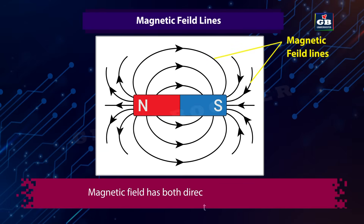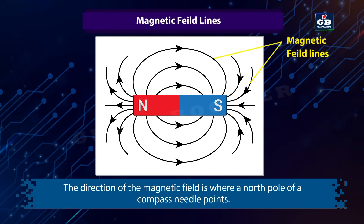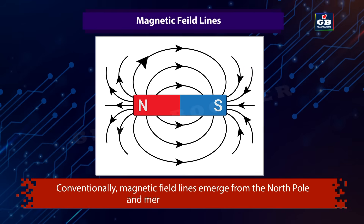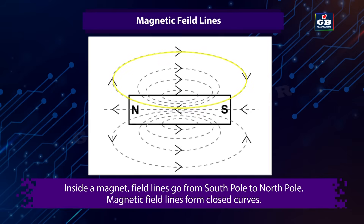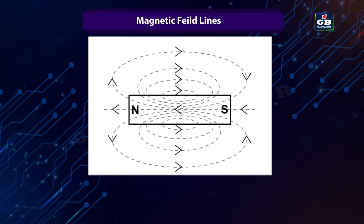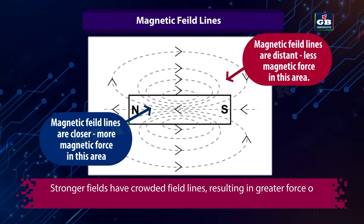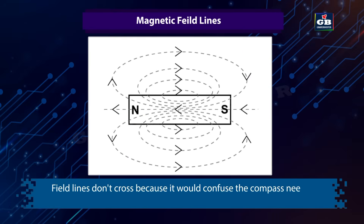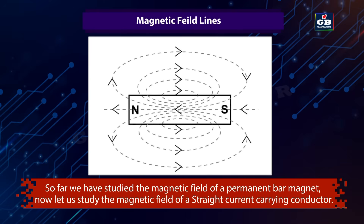Magnetic field lines. Magnetic field has both direction and magnitude. The direction of the magnetic field is where a north pole of a compass needle points. Conventionally, magnetic field lines emerge from the north pole and merge at the south pole. Inside a magnet, field lines go from south pole to north pole. Magnetic field lines form closed curves. The closeness of field lines indicates the strength of the magnetic field. Stronger fields have crowded field lines resulting in greater force on another magnet's pole. Field lines don't cross because it would cause the compass needle to point in two directions at once.